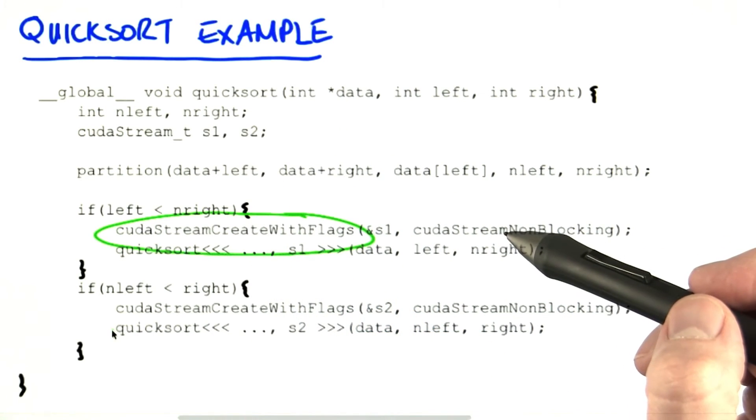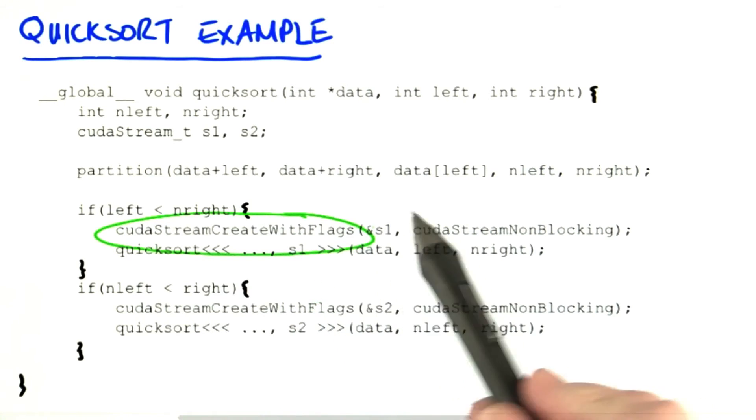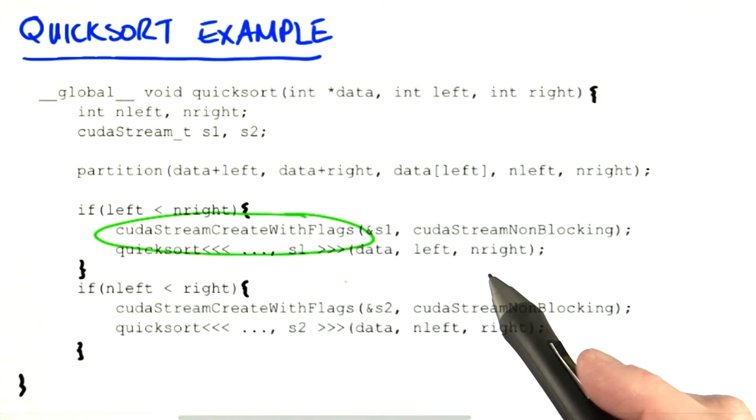Remember that CUDA streams run simultaneously, which means my two subsorts will execute in parallel. Without these streams, everything would run sequentially, because both of these launches would end up in the null stream. And that would defeat the purpose of the parallel sort, to have my program running sequentially.